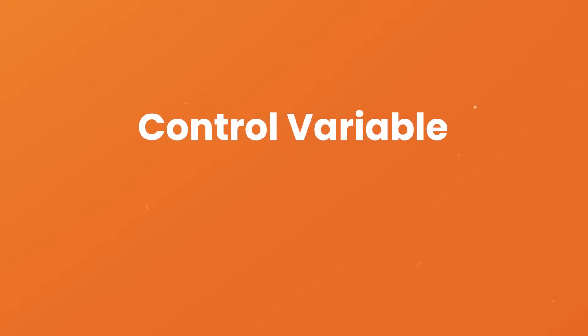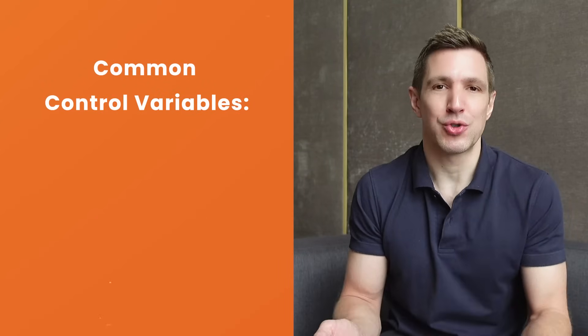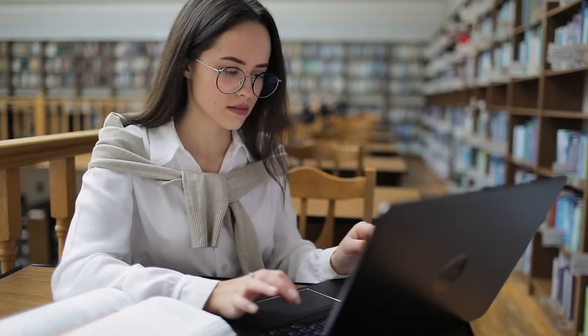This brings us to the third type of variable: the control variable. Simply put, a control variable is any variable that is intentionally held constant by the researcher to ensure that it doesn't have any influence on the other variables. One of the major challenges in identifying causal relationships — where one variable causes a change in another — is that it's difficult to isolate the impact of specific variables. So to minimize this risk, researchers will attempt, as much as possible, to hold all other variables constant. For example, they might control the temperature, the time of day, the lighting, and so on, to reduce the risk of other factors influencing the study's outcomes.